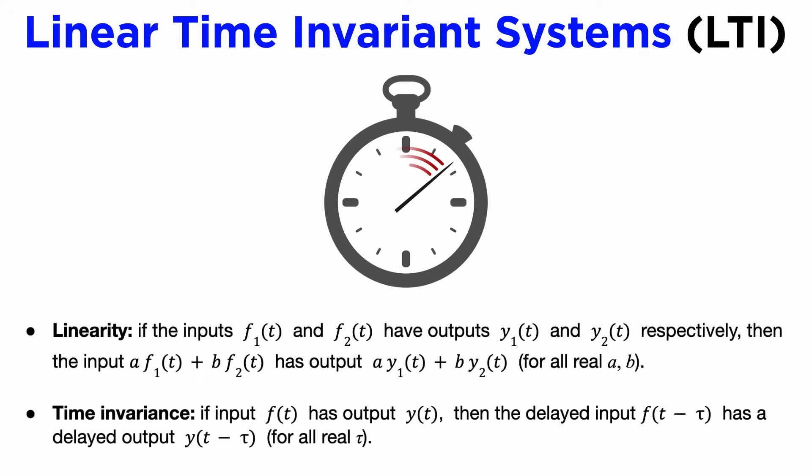Second, time invariance means that if we decide to delay our input by any time tau, the output will also be delayed by tau. This will be the case if our system has zero output when we have zero input, and this is often true if the initial conditions of our system are zero.